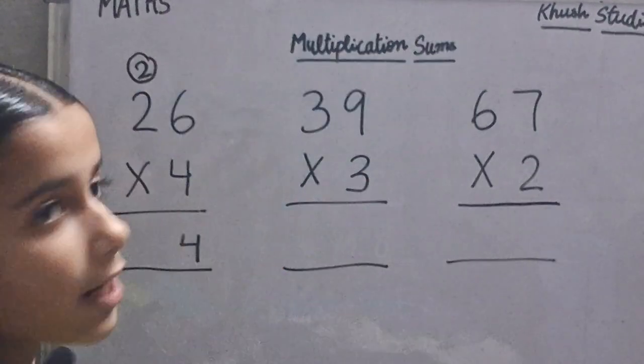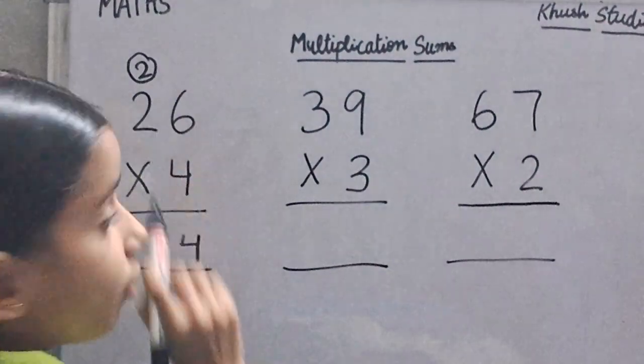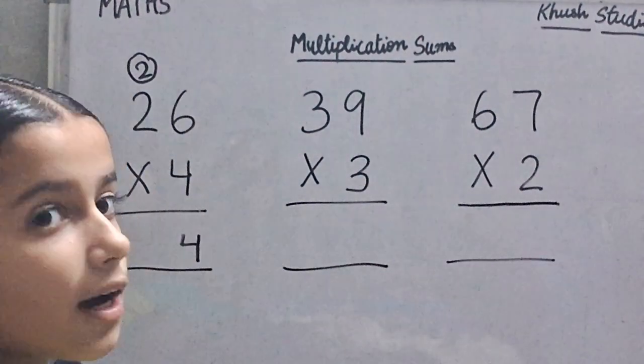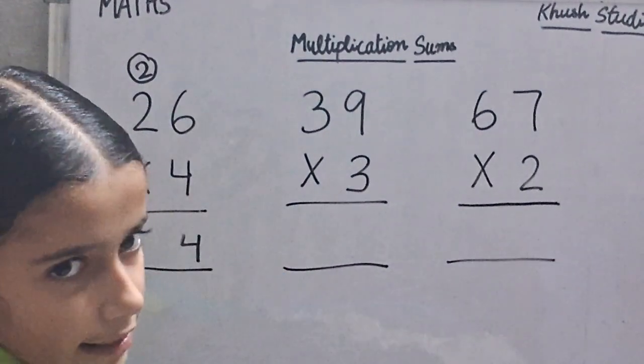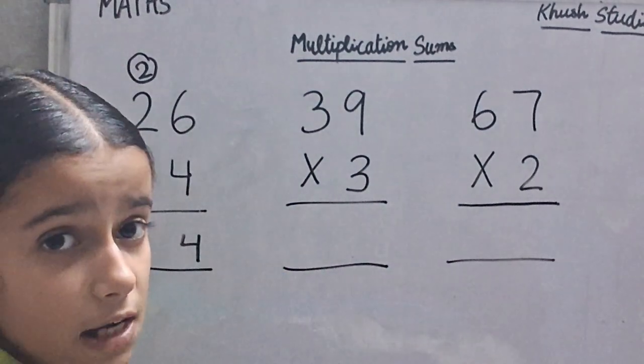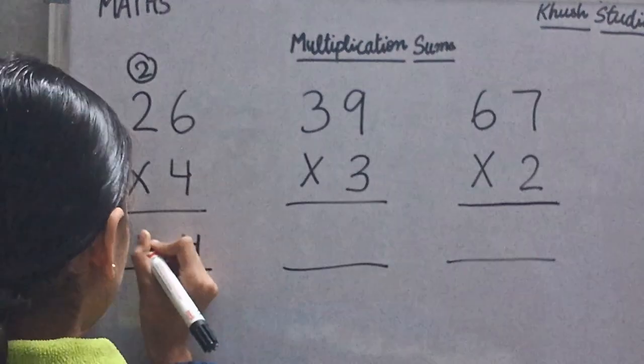We will carry 2. Then 2 times 4 is 8. We will add the carry: 8 plus 2 is 10.